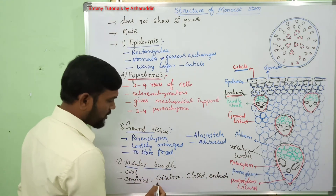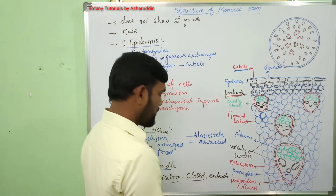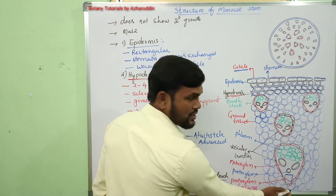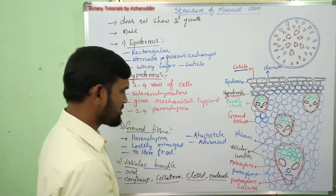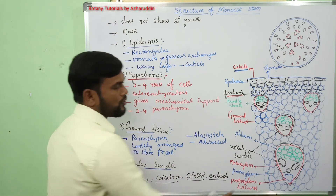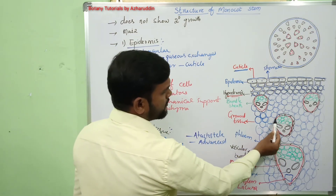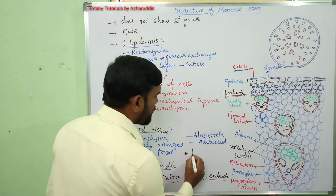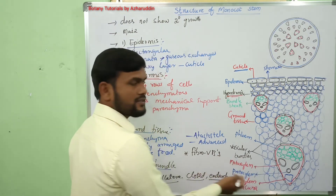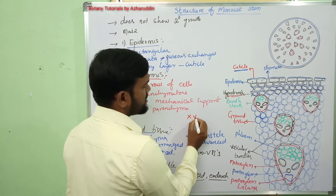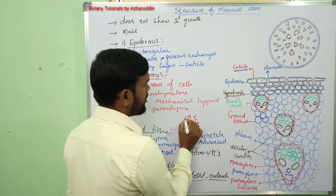Conjoint means both xylem and phloem are joined and occur side by side. Collateral means they occur side by side. Closed means there is no cambium between the phloem and xylem. Endarch means protoxylem elements are present towards the centre and metaxylem elements are present towards the periphery. Such vascular bundles are called endarch bundles. These vascular bundles are covered with a fibrillar sheath, so they are called fibrovascular bundles.